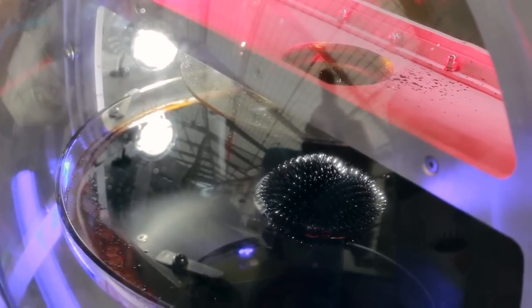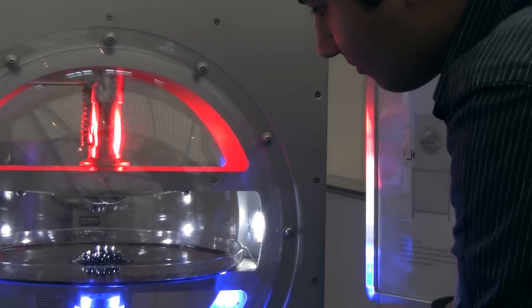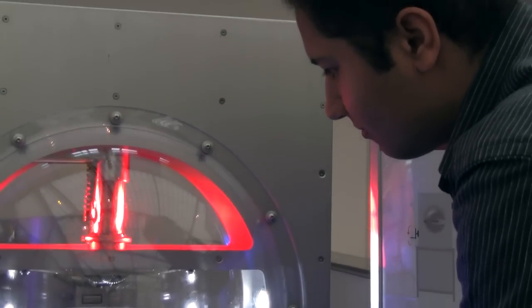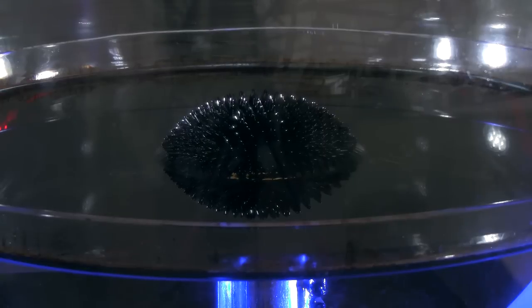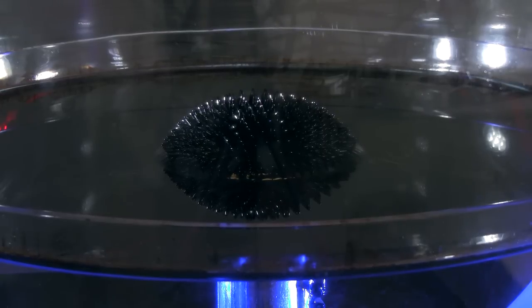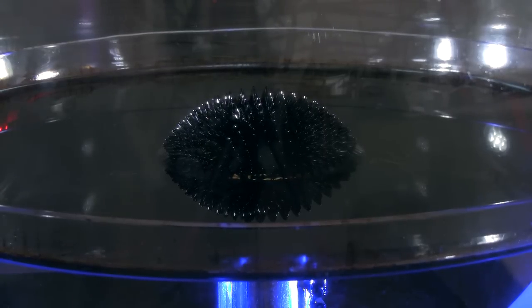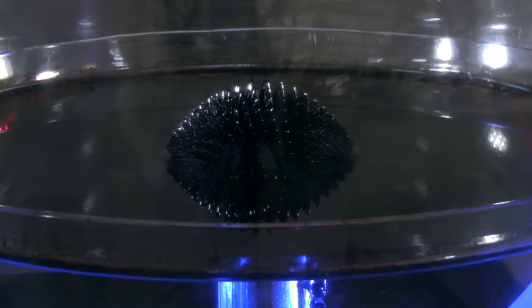Ferrofluid is made of tiny specks of iron oxide, oil, and surfactant. The surfactant is a soapy film that is used to bind the oil and the iron oxide. Without it, the magnets will pull the iron oxide out of the oil.